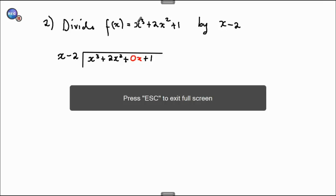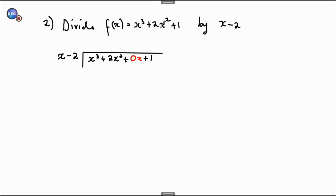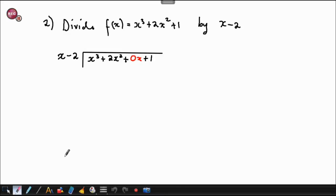Now divide f(x) = x cubed plus 2x squared plus 1 by x minus 2. Notice we have four terms here, not three. It is important to include x cubed, then 2x squared, then x, then a constant — powers 3, 2, 1, 0. You have to have all of them; otherwise you're going to have a problem. Let's start by dividing the first term by x.